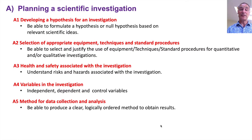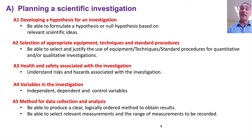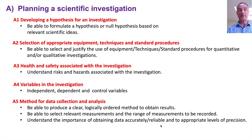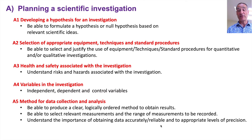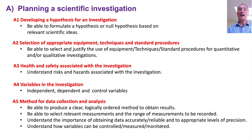The final section of planning is about the method for data collecting and analysis. You should be able to produce a clear, logically ordered method to obtain results, and select the relevant measurements and range of measurements to be recorded — so what values and how big the range of results will be. You should understand the importance of obtaining accurate and reliable data to an appropriate degree of precision, and understand how the variables can be controlled, measured or monitored. That's part A — the planning — and you're probably familiar with most of those already.